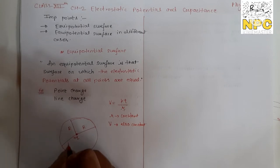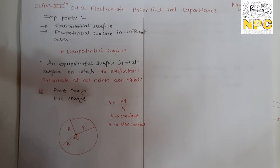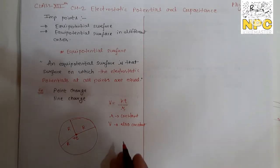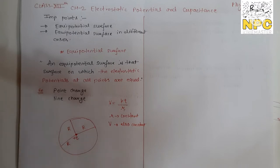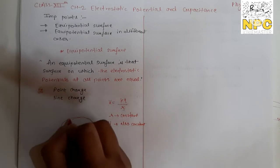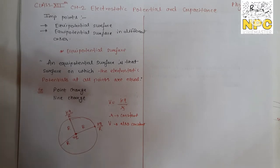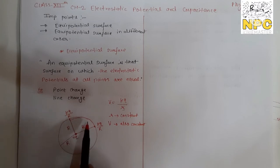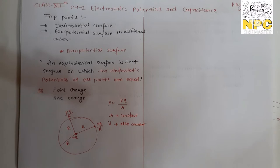For a point charge, if you draw a sphere of a particular constant radius R around the charge, the radius will be the same at every point — radius will not change because you are drawing a particular sphere around the charge. For a positive charge, the direction is away from the charge. So for any point on this sphere, the potential is kQ/R. Since the radius is the same, the potential is the same at all points on this surface — that is the equipotential surface.